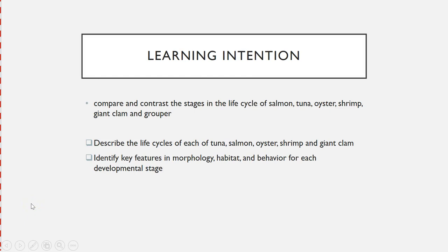For this section, we are going to compare and contrast the different life stages for the life cycles of salmon, tuna, oyster, shrimp, giant clam, and grouper.